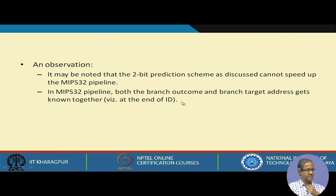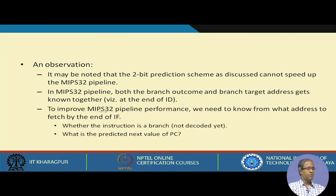For a MIPS 32 pipeline, however, we do not gain much from either scheme. Because of the simplicity of the MIPS instruction set encoding, we always know whether the branch is taken or not taken — and the target address — by the end of the ID stage. So whether we use one-bit or two-bit prediction, we still have to wait until the end of ID to know if the prediction was correct.